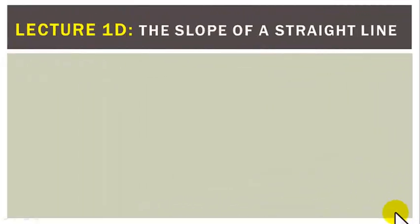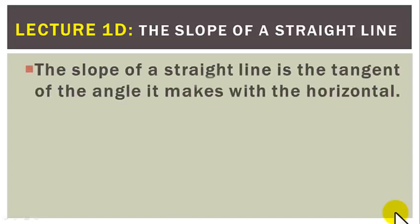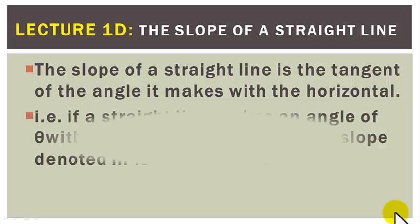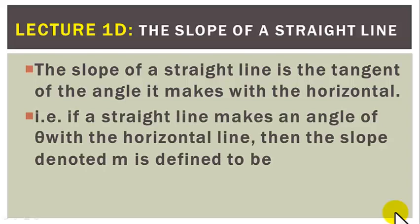Lecture 1D on the slope of a straight line. The slope of a straight line is the tangent of the angle it makes with the horizontal. If a straight line makes an angle of theta with the horizontal line, then the slope, denoted by m, is defined to be m equal to tan theta.